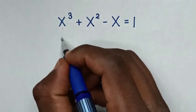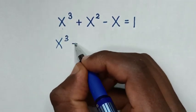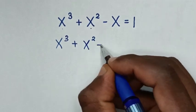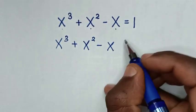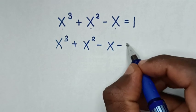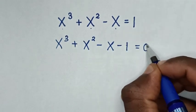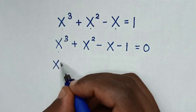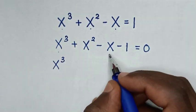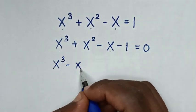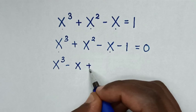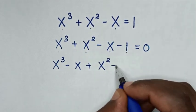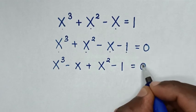So it will be x³ + x² - x, then we take 1 to the left side, so it will be minus 1 is equal to 0. Then in the next step it will be x³ - x + x² - 1 = 0.